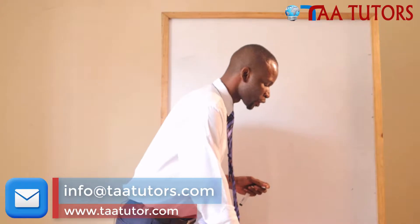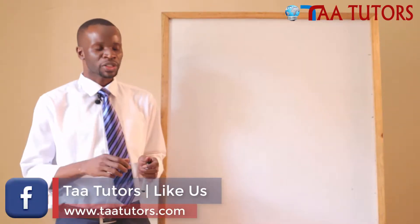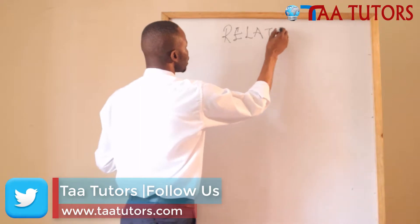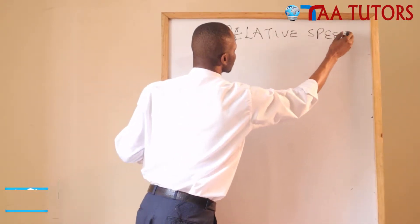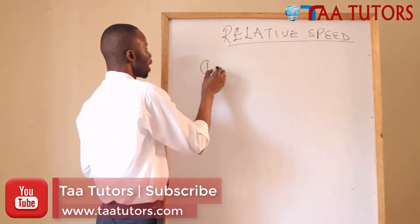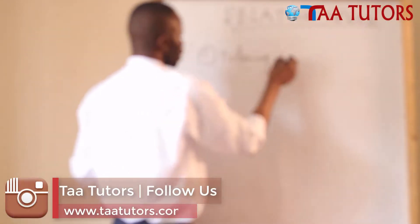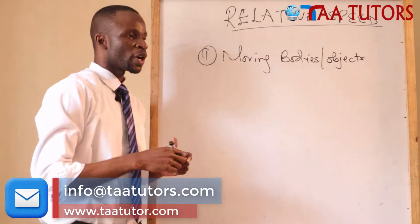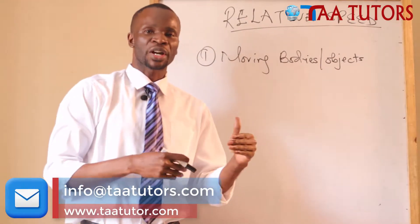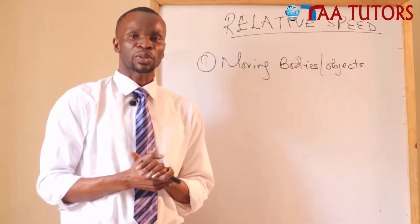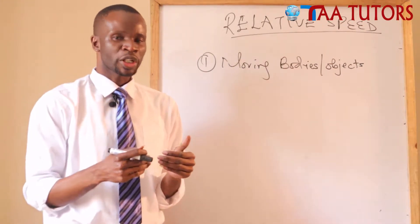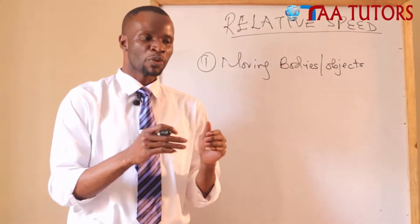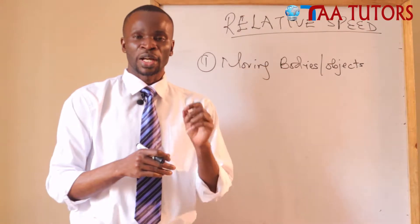Before we move on, there are terms we really need to understand. When looking at relative speed, we have to talk about moving bodies. These could be objects — for example, a car is a moving body. These objects may move at different speeds; one may be moving faster than the other. Another key point is that these objects may move towards each other or in the same direction.